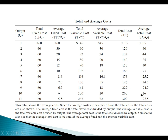This table shows average costs calculated from total cost. Average fixed cost is total fixed cost divided by output. Average variable cost is total variable cost divided by output. Average total cost is total cost divided by output. You should also note that average total cost equals the sum of average fixed cost and average variable cost.